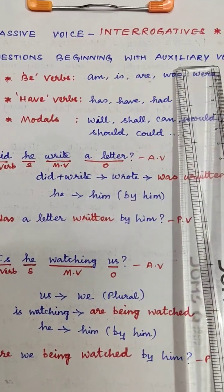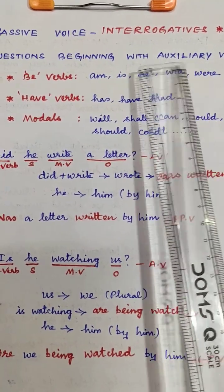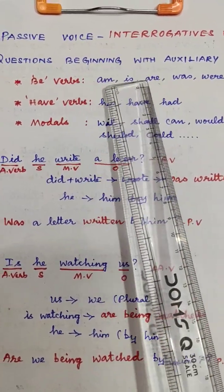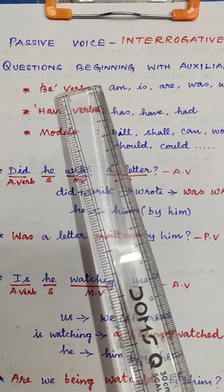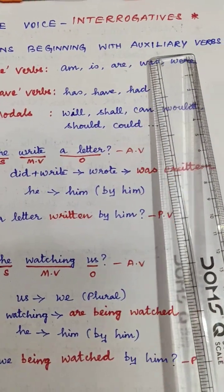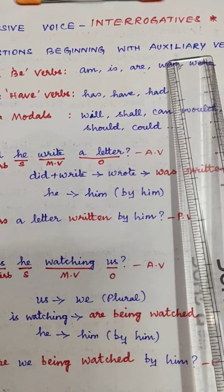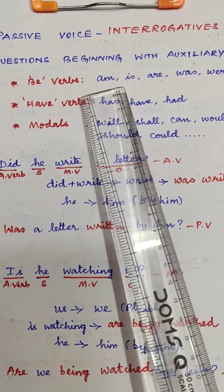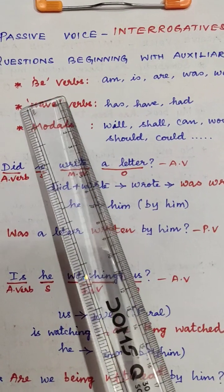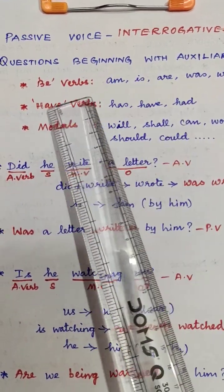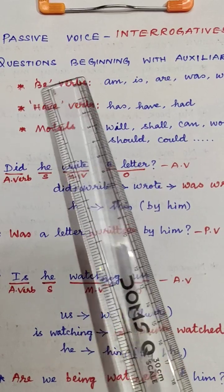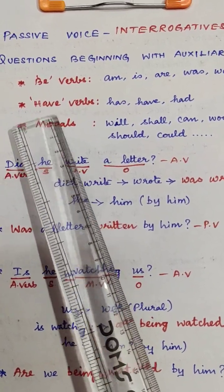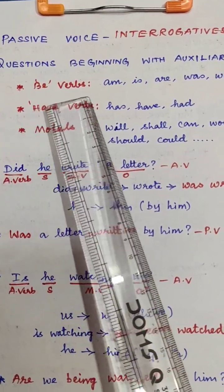Auxiliary verbs start with yes or no type questions. So, auxiliary verbs start with question words. Auxiliary verb means be verbs, have verbs, and modals — do verbs.